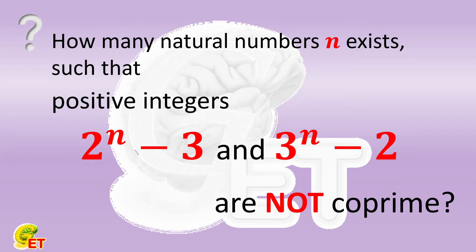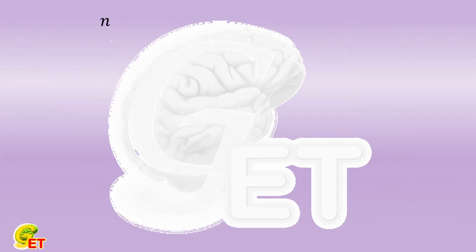To think about how many n there are, we might first simply check with a particular n, between 2 to the nth power minus 3 and 3 to the nth power minus 2, if there is an obvious common divisor which is greater than 1.